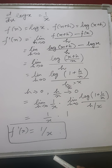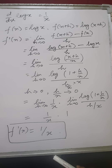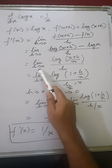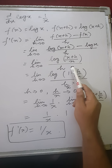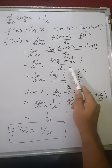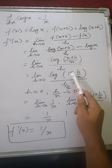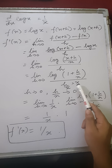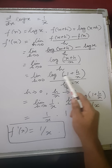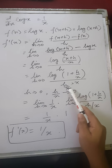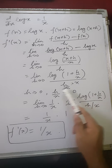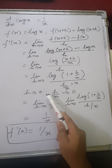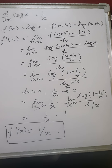We know the property of logarithms: log m minus log n equals log(m/n). So this becomes limit h tends to 0 of log((x+h)/x) all upon h, which simplifies to log(1 + h/x). Now we divide and multiply by x in the denominator, making it h upon x into x. As h tends to 0, h upon x also tends to 0.